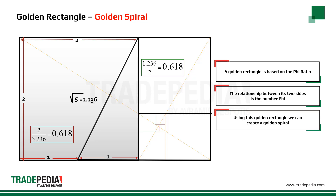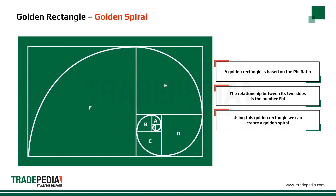Using this golden rectangle, we can create a golden spiral. A golden spiral moves by the number phi every one quarter turn. That means if you take A over B, it is equal to 0.618; B over C is equal to 0.618, and so on.